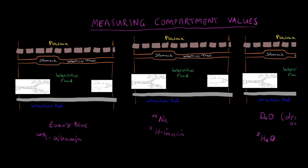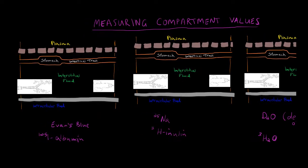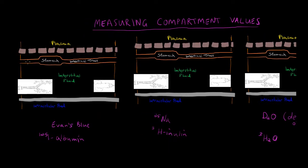We have three scenarios here. Let's start with this scenario: suppose we have an indicator that can only remain in the plasma. If we inject fluid with an indicator and it cannot leak out into the interstitial fluid, we can measure the plasma compartment.